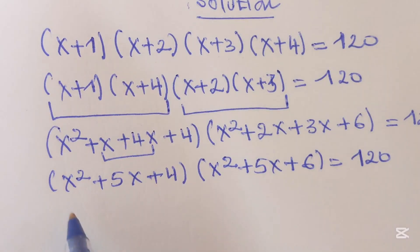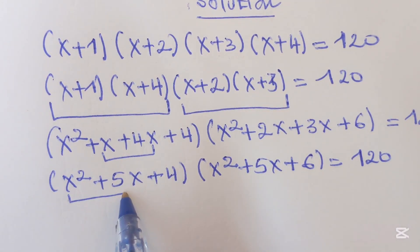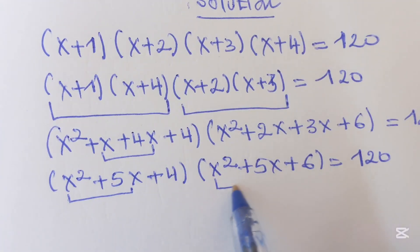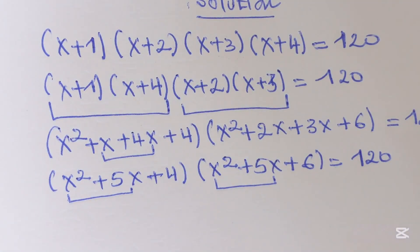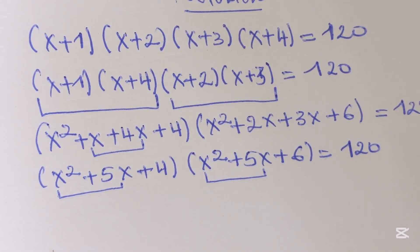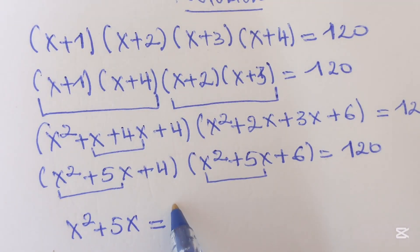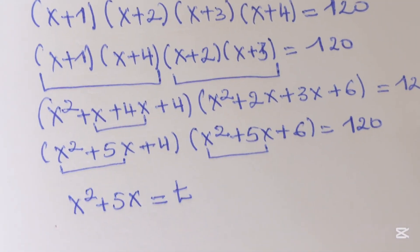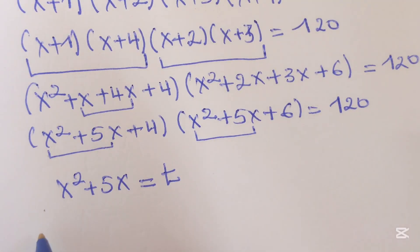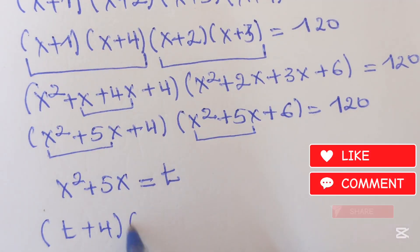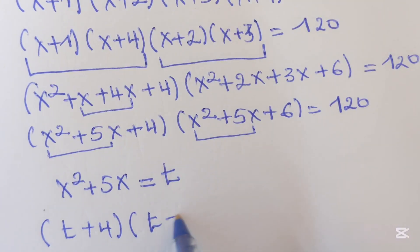What can we do right over here? Here we have x squared plus 5x, and here we have x squared plus 5x. These are common things we can deal with. We can take here x squared plus 5x and write it to any value like t, any letter t. Here we simply get t plus 4 and a t plus 6, which equals to 120.